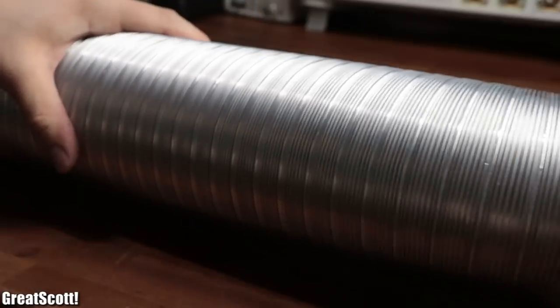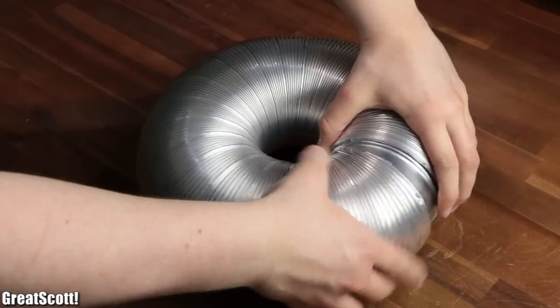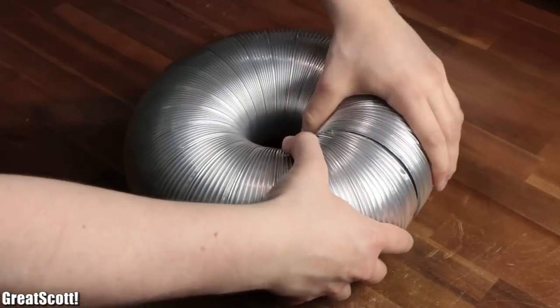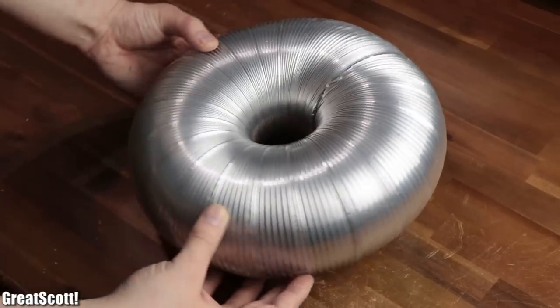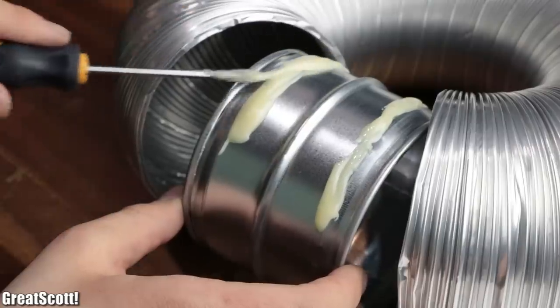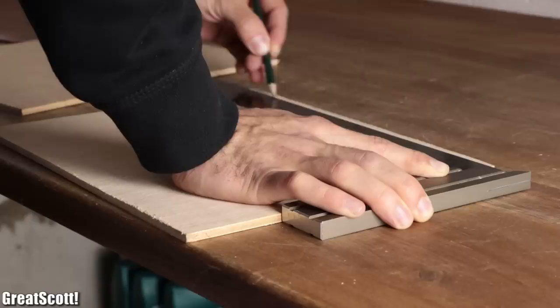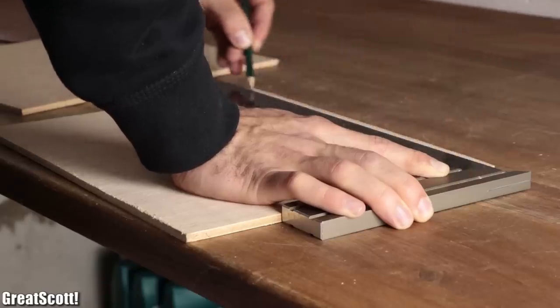After stretching it out and cutting off a fitting length, I used an adapter piece to form a donut shape with it. To hold this form permanently though, I mixed up quite a bit of two-component adhesive, applied it generously to the adapter, and pushed the air duct onto it.